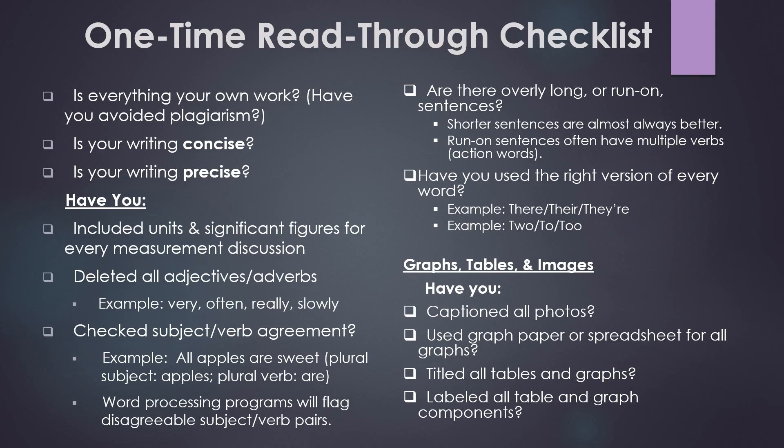Here is a non-comprehensive one-time read-through checklist that you might use when you are going through your lab report. Remember, you should always do a separate read-through at least once just to make sure all of your sentences make sense and to catch grammar errors and typos before you do this more focused read-through for word choice editing. I'm going to read through the list, but you can also pause this and come back to it anytime you want. First of all, importantly, is everything your own work? Have you avoided plagiarism? Second, is your writing concise? Third, is it precise? Have you included units in significant figures for every measurement discussion?